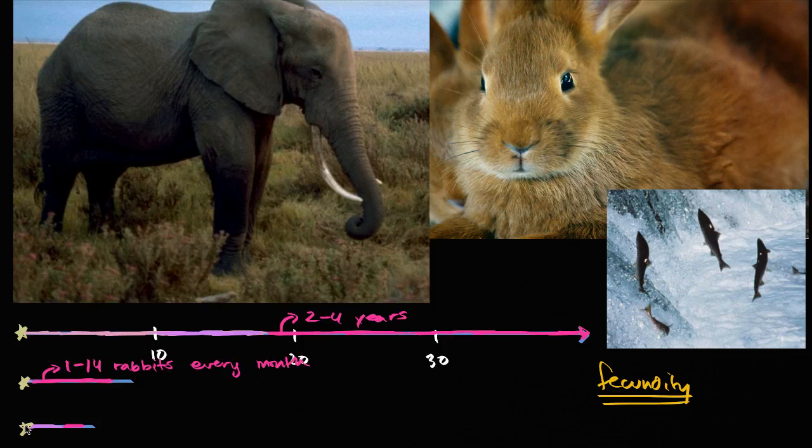they make their way down that river, down that stream into the ocean, and then they have many years of a growth phase in the ocean where they get larger and larger. They're not reproducing then.